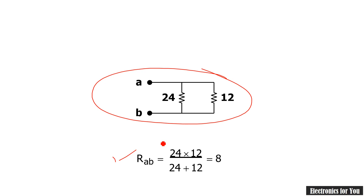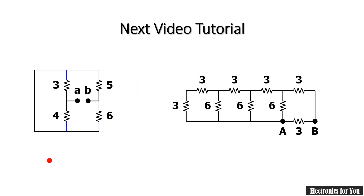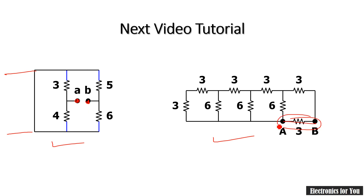In the next video tutorial, I will explain problems where the A and B terminals are not at the outside but exist somewhere inside the network, and we will find the equivalent resistance for such networks. Please see the next tutorial, and please subscribe if you are visiting the channel for the first time. Thank you.